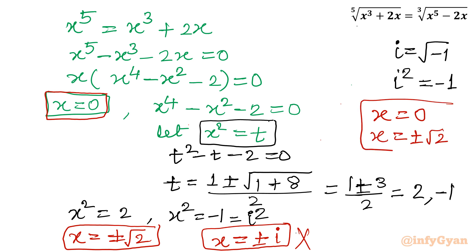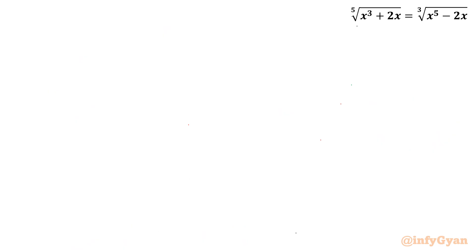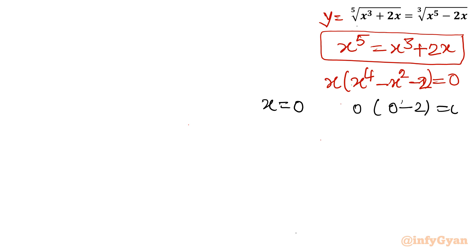So far we have three solutions: x equal to 0, x is equal to plus root 2, and x is equal to minus root 2. Let us verify all the three solutions. I will consider x times x power 4 minus x square minus 2 equal to 0. So let me consider the last equation. So I will put x equal to 0. So yes 0 in bracket 0 minus 2 equal to 0. So it is true.